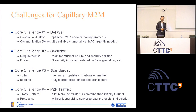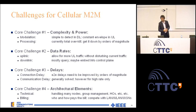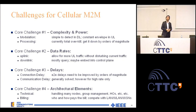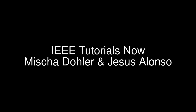At the end of the presentation, I'll be summarizing the challenges for capillary machine to machine systems — delays, security, standards, and peer-to-peer traffic abilities — as well as the challenges for cellular M2M, which mainly pertain to complexity, power, data rates, delay, and architectural design. We will also be summarizing 10 predictions for M2M for the next year. I hope you will enjoy the longer version of this tutorial, which you can download from the IEEE Communication Society website. Thank you very much.